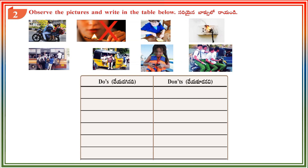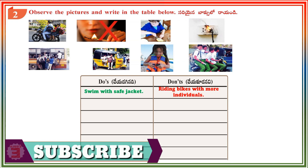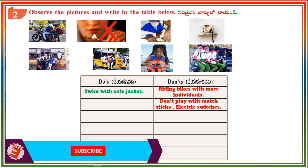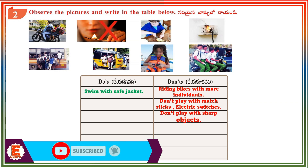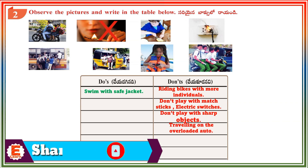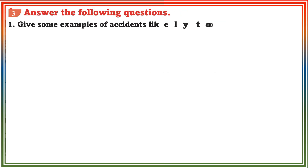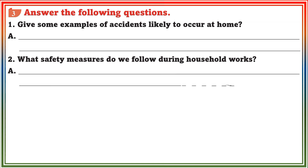Section 2: Observe the pictures and write in the table below. Do's: Swim with a safe jacket. Don'ts: Riding bikes with more individuals, don't play with matchsticks or electric switches, don't play with sharp objects, traveling on the overloaded auto, bike riding by minors, traveling on the overloaded bus.